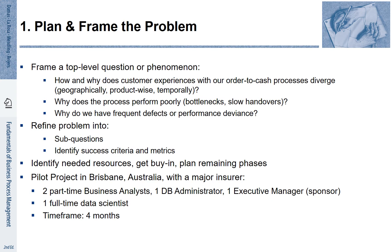Let's start with phase number one: plan and frame the problem. First, we have to formulate the problems that we are interested in, in a top-down way. Typical questions may be: how and why does customer experience with our order-to-cash process diverge? Why does the process perform poorly? Or why do we have frequent defects and performance deviants? These overall questions can be broken down into sub-questions and associated with performance and quality criteria.